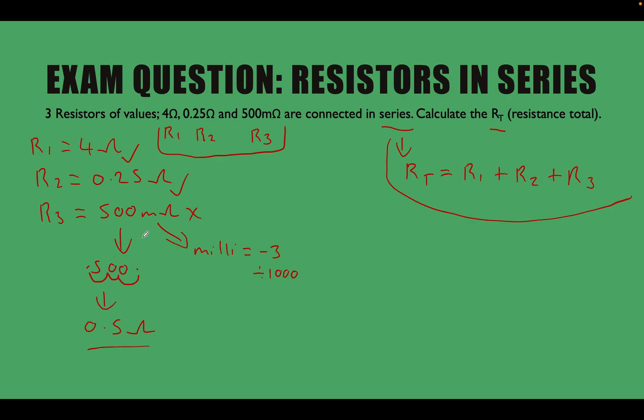So what we're saying there is that 500 milliohms is the same as 0.5 ohms. Let's just mark this off here so we get this out of the way.